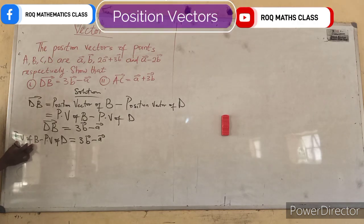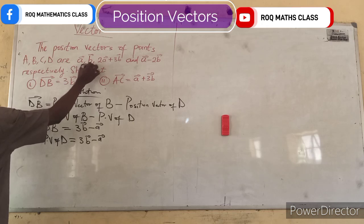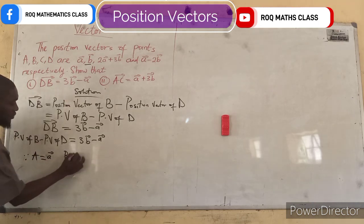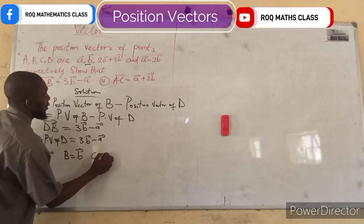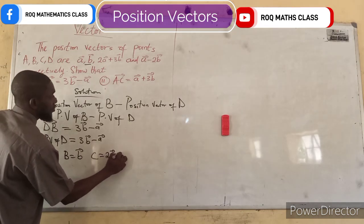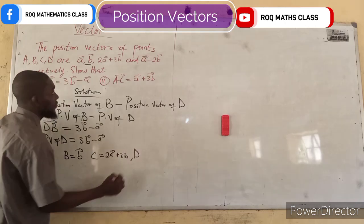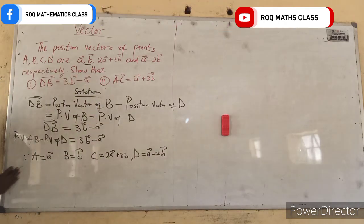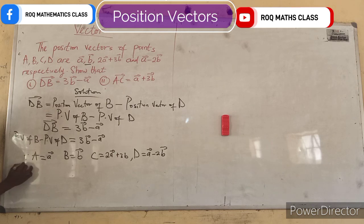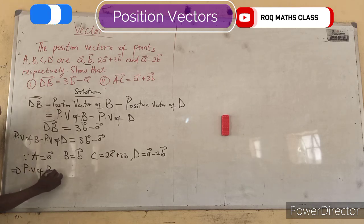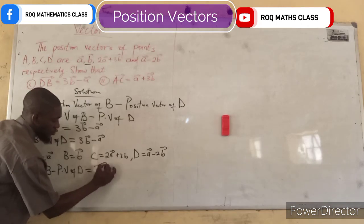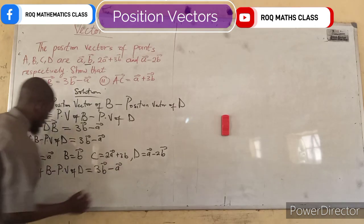What is the value of position vector of B? The position vector of B is simply vector b. Point A is vector a, point B is vector b, point C is 2 vector a plus 3 vector b, and point D is vector a minus 2 vector b. So position vector of B minus position vector of D must be equal to 3 vector b minus vector a.